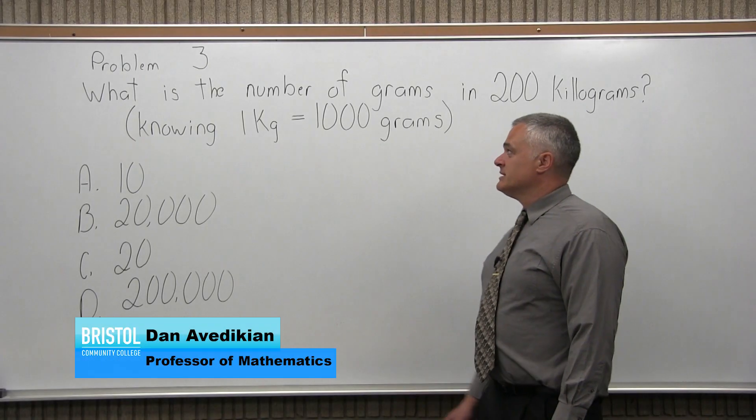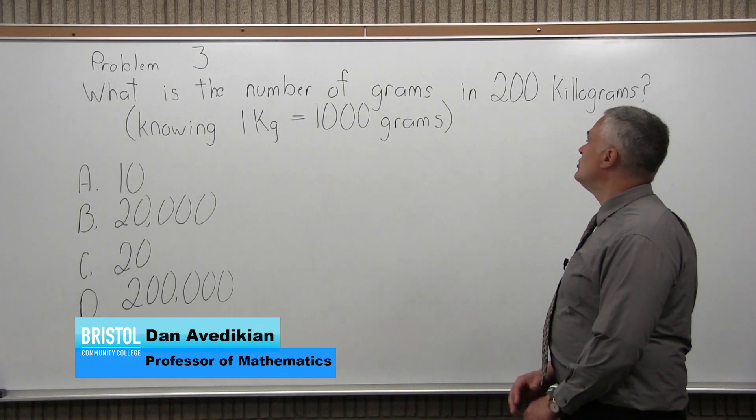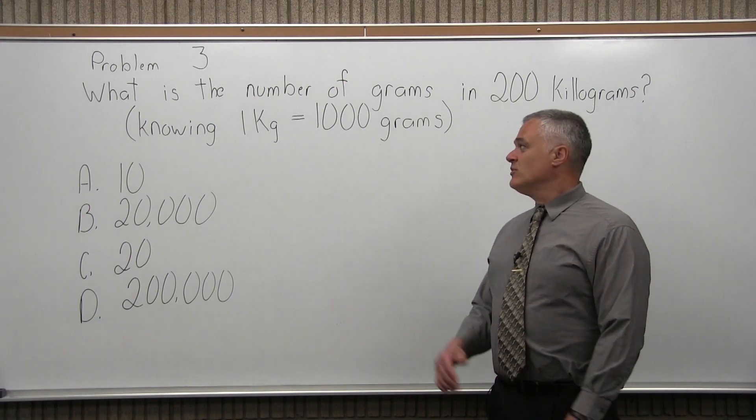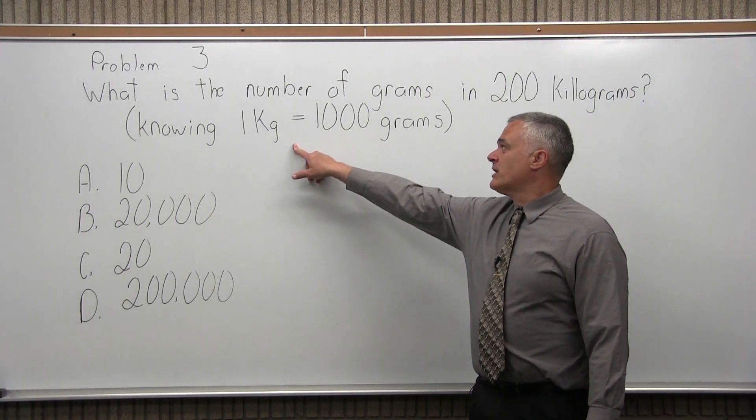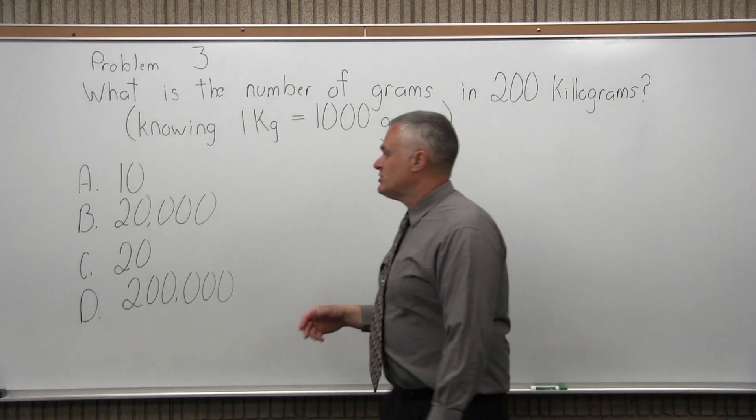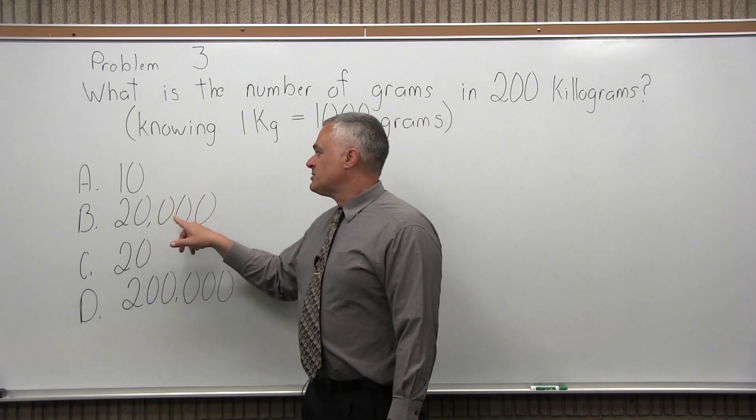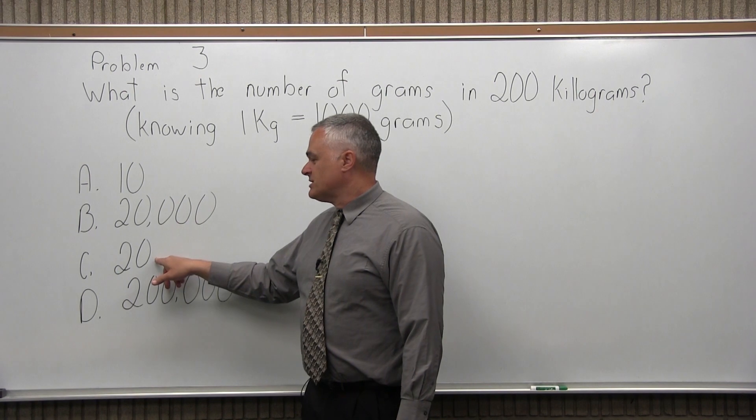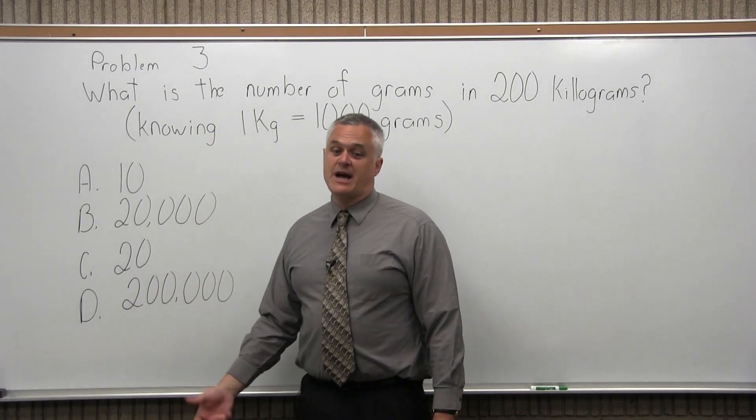This is Problem 3. It says, what is the number of grams in 200 kilograms? And they give you a hint. It says, knowing that one kilogram equals 1,000 grams. And you have four options to choose from. Option A is 10, Option B is 20,000, Option C is 20, and Option D is 200,000.